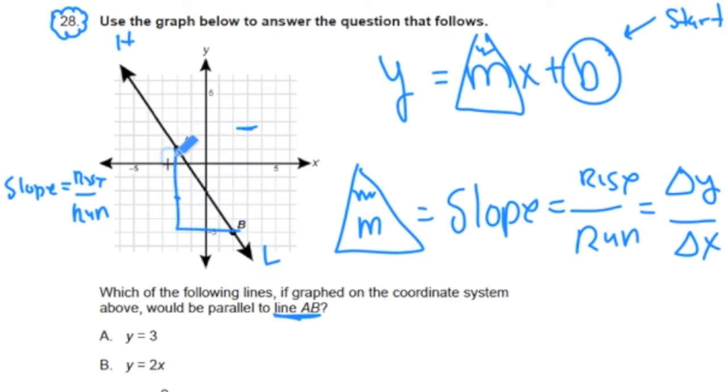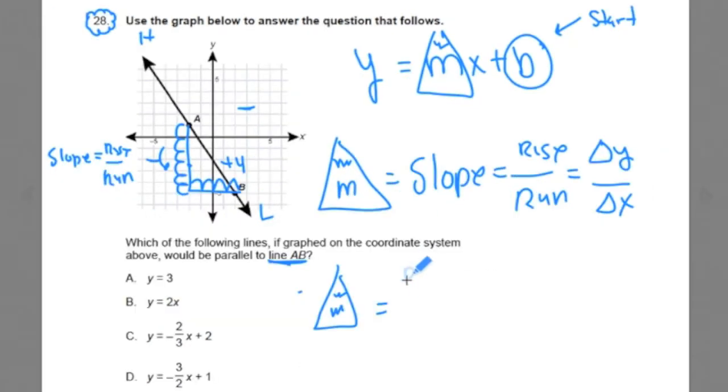So we're going down how much? 1, 2, 3, 4, 5, 6. So we go down negative 6 and we run 1, 2, 3, 4, positive 4. So if we're thinking about the slope of this line, our rise over run is negative 6 over 4, which reduces to negative 3 over 2.